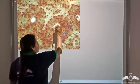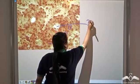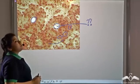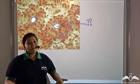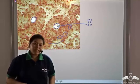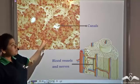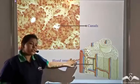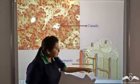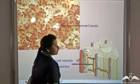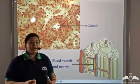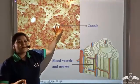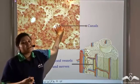Now, what are these pore-like structures present in the bone tissue? These pore-like structures are known as canals, and they are present in the bone tissue to accommodate the blood vessels and the nerves. So the canal is present in the bone tissue so that it can accommodate the blood vessels and the nerve supply.